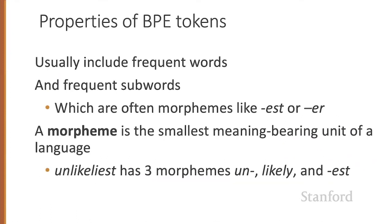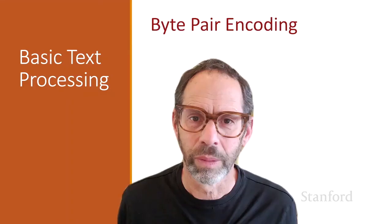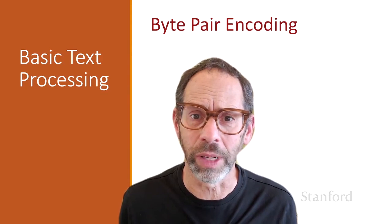The resulting BPE tokens will cover words that occurred frequently in the corpus, so frequent words will be tokenized as whole tokens, as will frequent subwords. Often those frequent subwords are morphemes like EST or ER. A morpheme is the smallest meaning-bearing unit of a language — for example, the word 'unlikeliest' has the three morphemes: un, likely, and est. Often these BPE tokens turn out to correspond to morphemes, although not always. The byte pair encoding algorithm we've described is one of a set of corpus-based tokenizers that are extremely widely used throughout natural language processing.